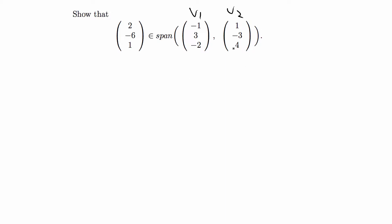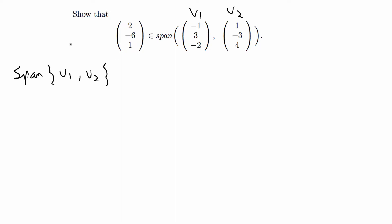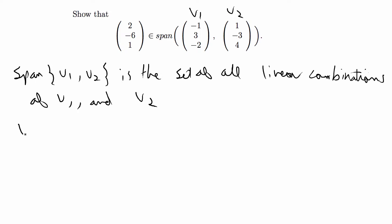For this type of problem you basically just have to know what a span of a set of vectors is by definition, and then prove that this vector is in the span. By definition, the span of v1 and v2 is the set of all linear combinations of v1 and v2. So we want to show that there exist scalars c1 and c2 such that c1 times v1 plus c2 times v2 equals the vector (2, -6, 1).